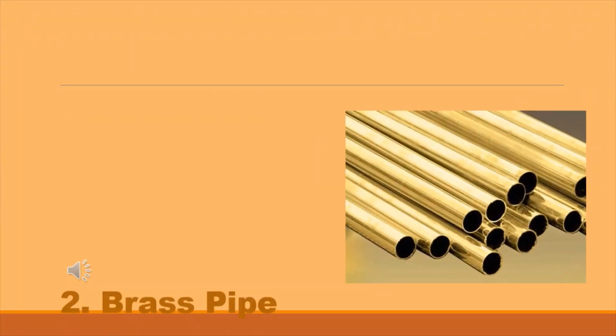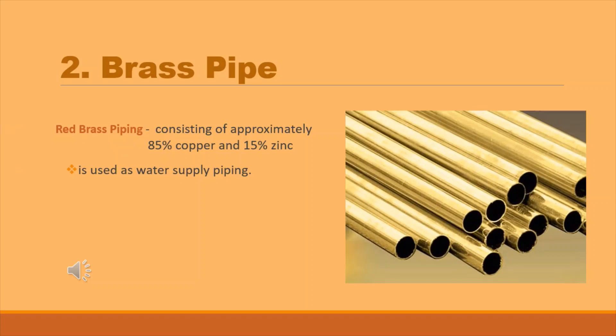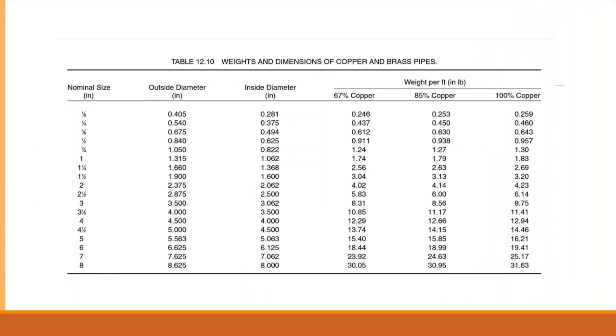Brass pipe: red brass piping consists of approximately 85% copper and 15% zinc. It is used as water supply piping.